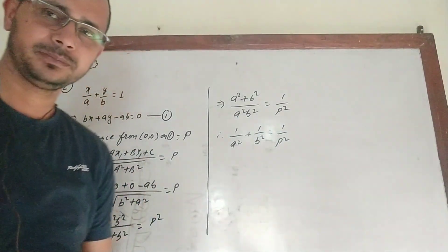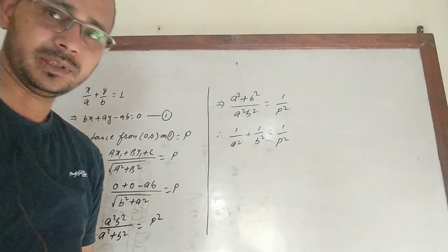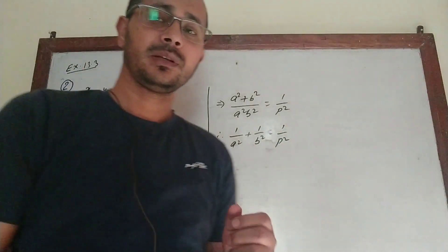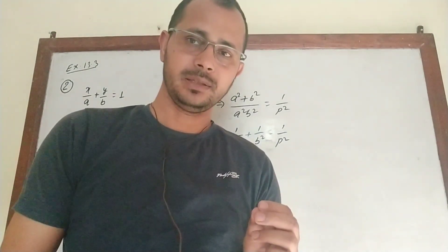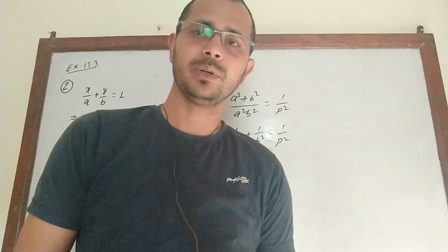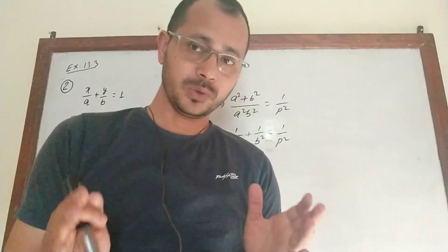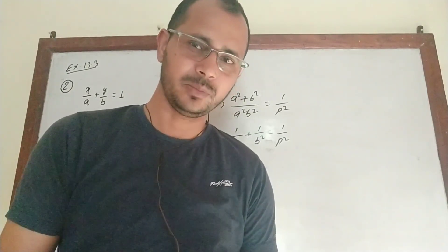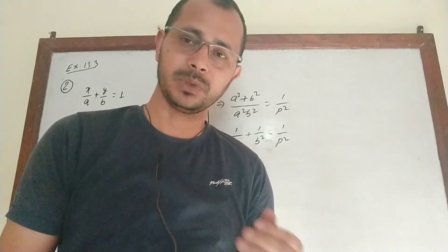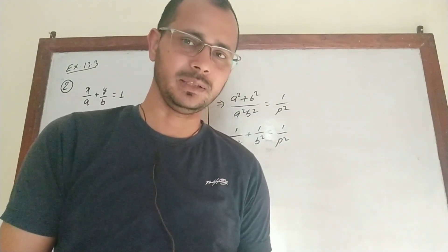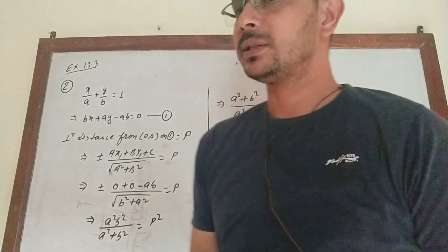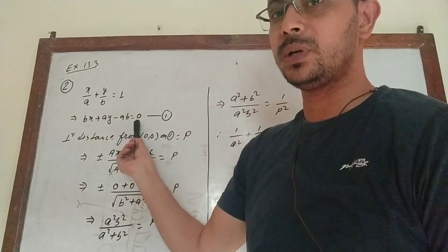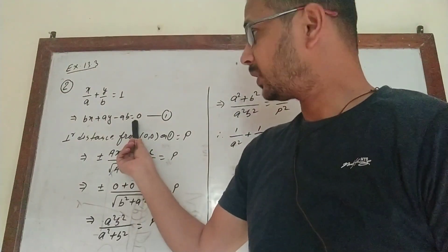Question number 2: the perpendicular distance from the origin to the line x/a + y/b = 1 is p. Prove that 1/a² + 1/b² = 1/p². We simplify the line equation: multiplying through gives bx + ay − ab = 0. The perpendicular distance from the origin to this line is p, so using the formula |a·x1 + b·y1 + c| / √(a² + b²), we substitute x1 = 0, y1 = 0 and get ab / √(b² + a²) = p.